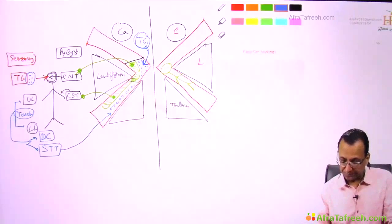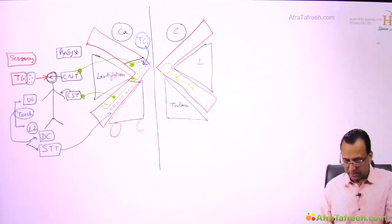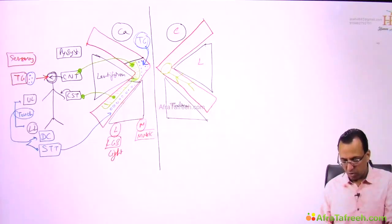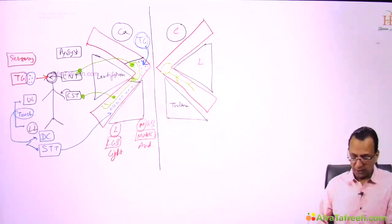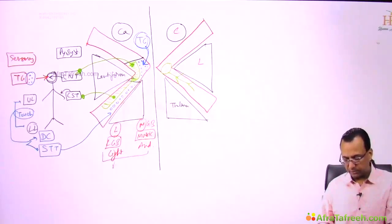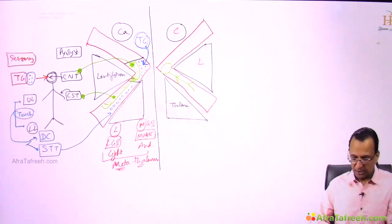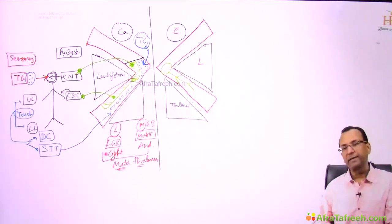Looking at the medial and lateral geniculate bodies: the lateral geniculate body is for the light pathway and the medial geniculate body is for the music/auditory pathway. Together they form the metathalamus, which is part of the diencephalon. The metathalamus has the lateral geniculate body for the visual pathway and the medial geniculate body for the auditory pathway.